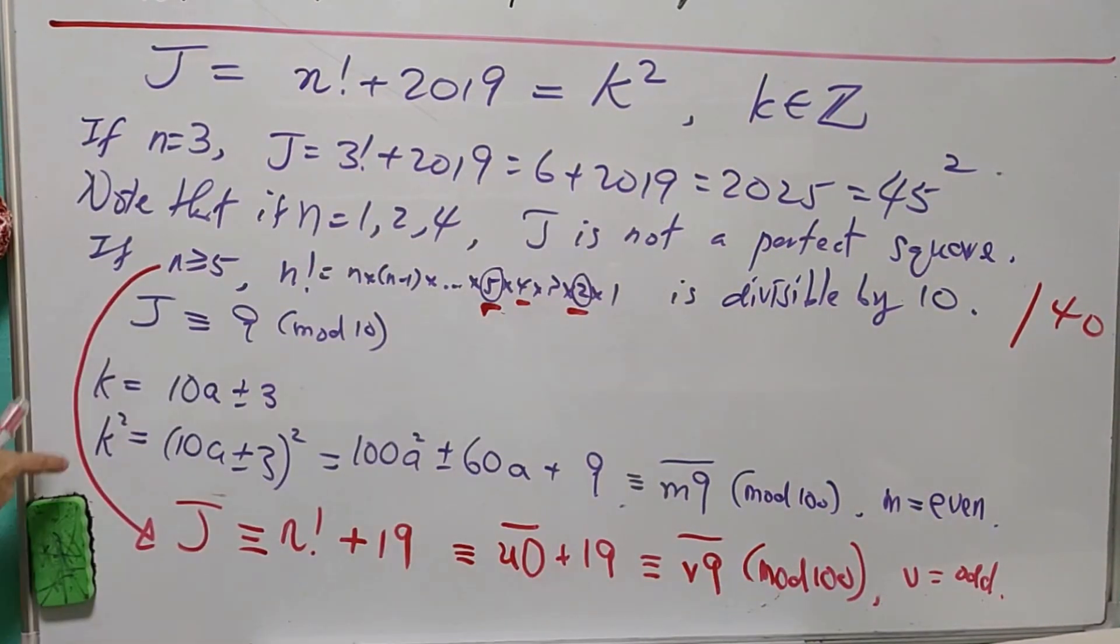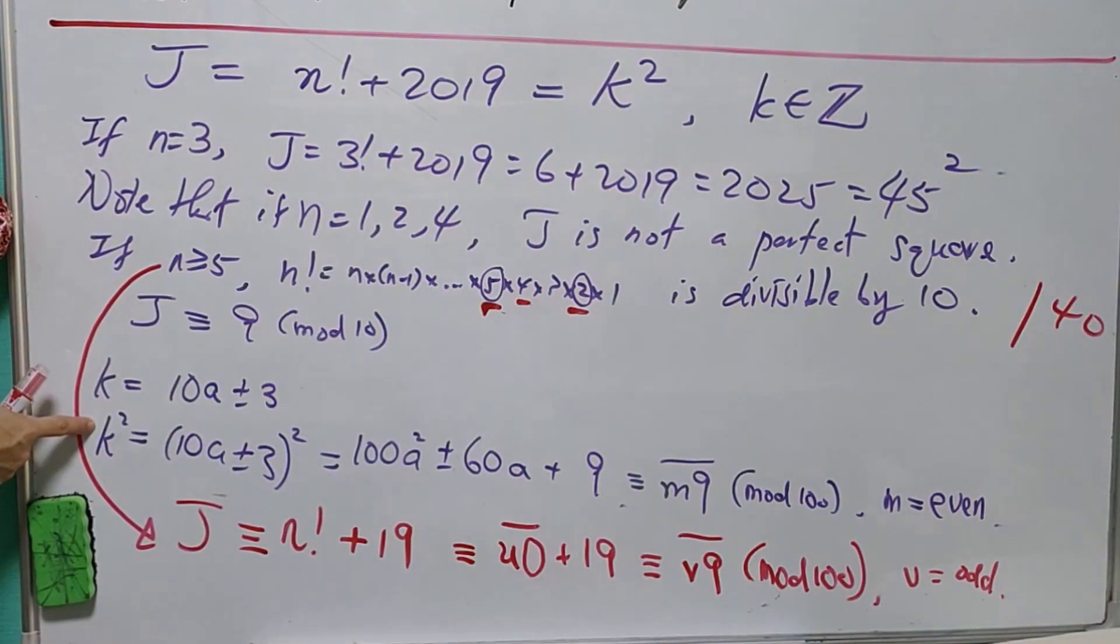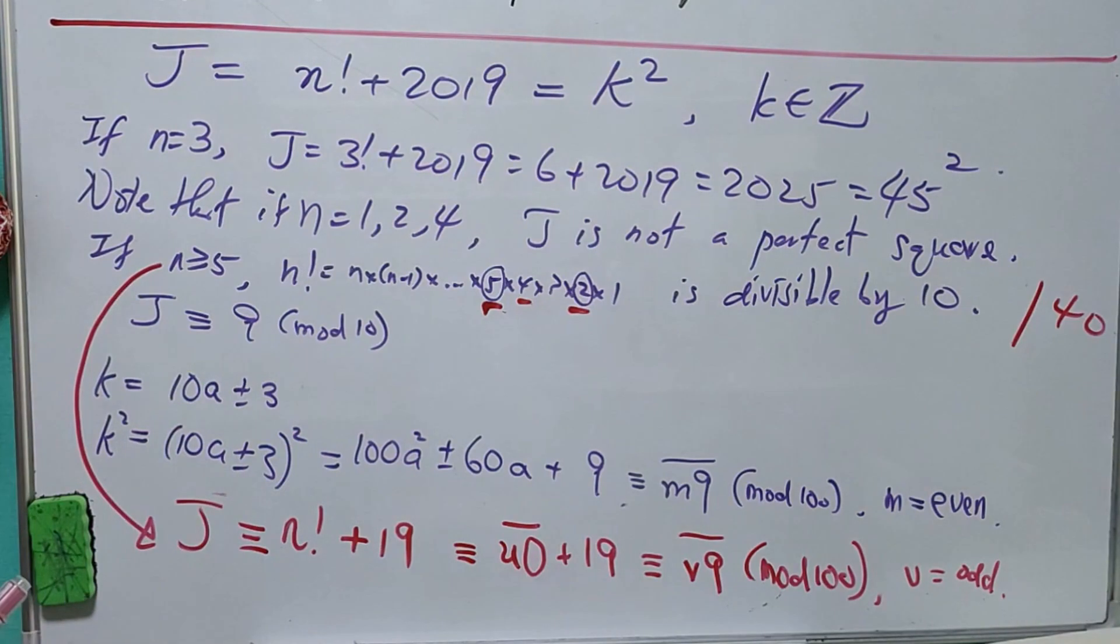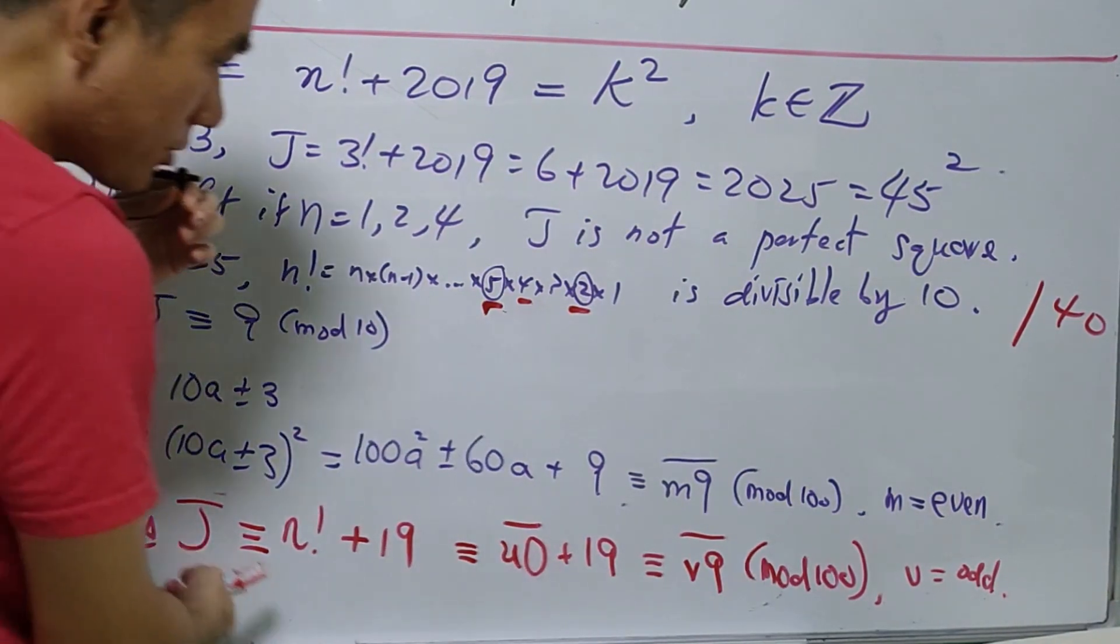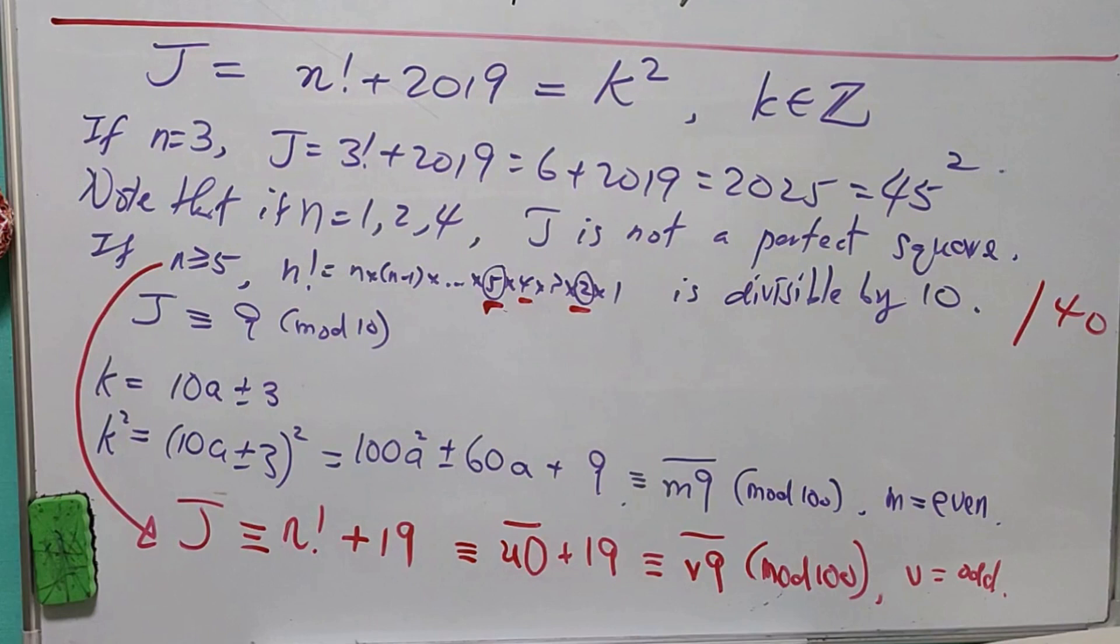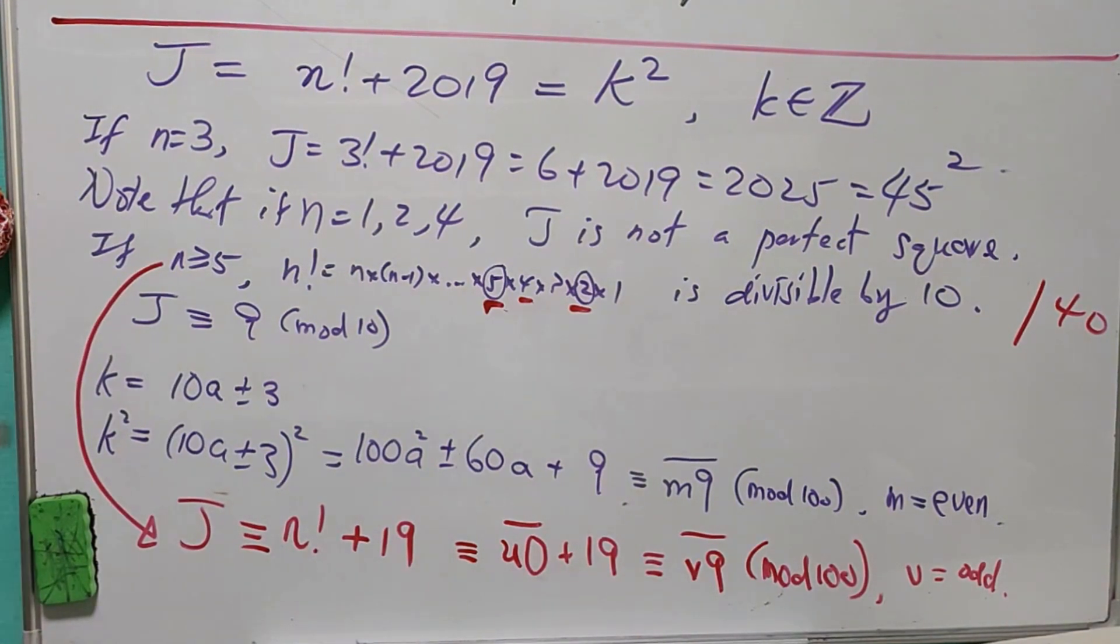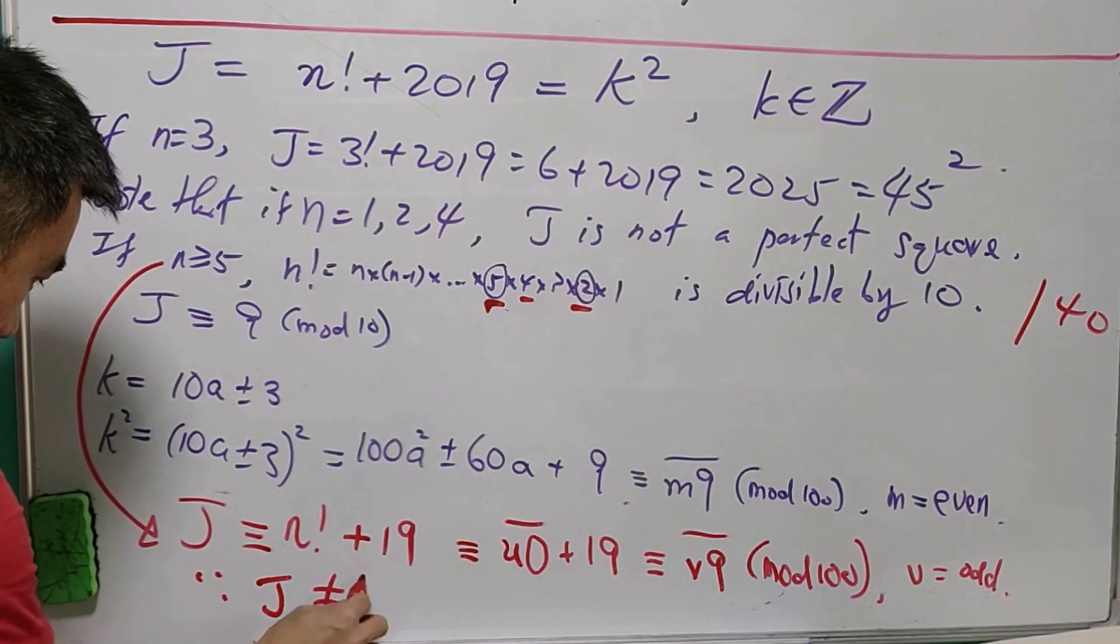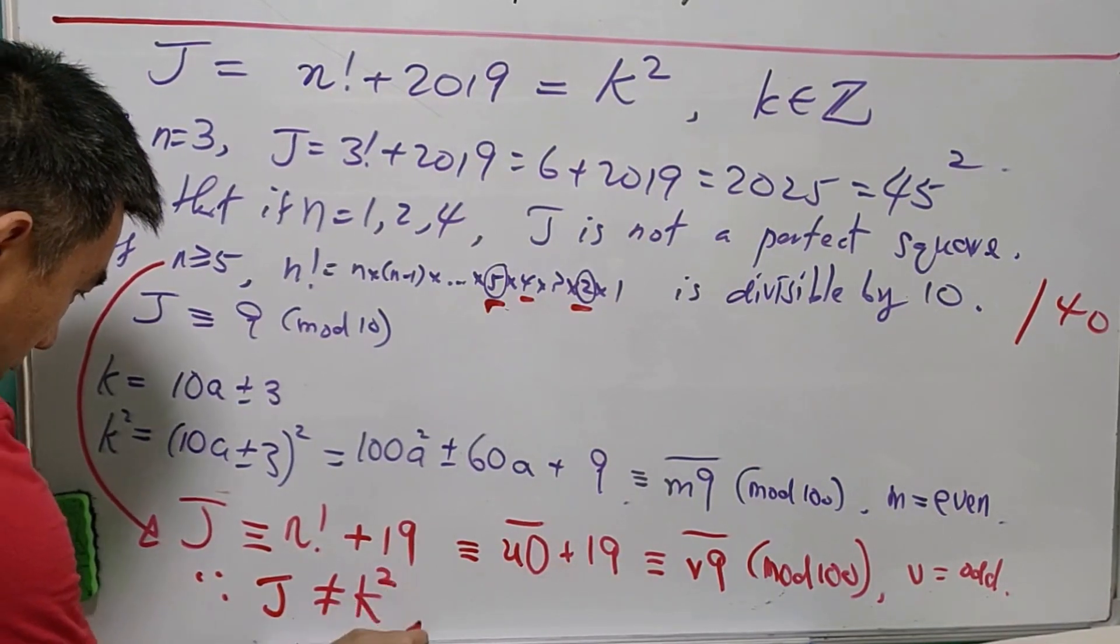So in this case, the last two digits of k² is m9, where m is an even number. For j, the last two digits is v9, where v is an odd number. Therefore, j is not possible to be a perfect square.